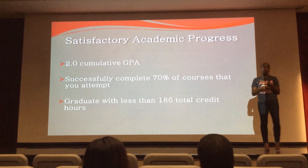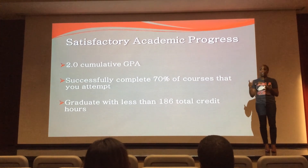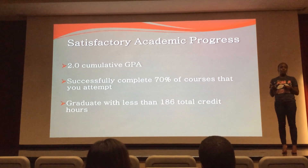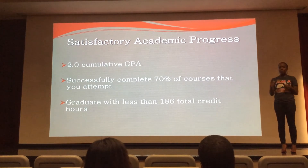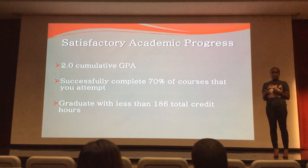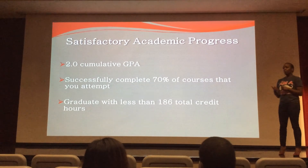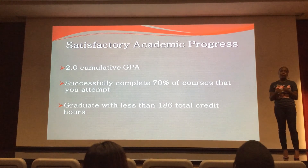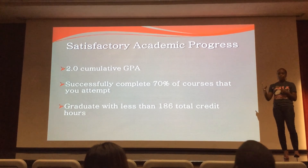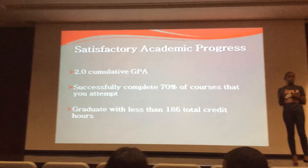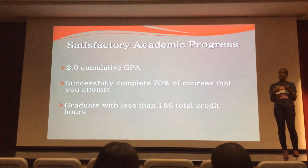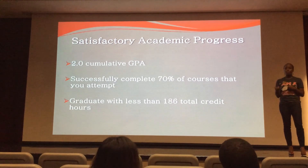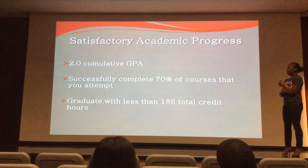Satisfactory Academic Progress: the federal government requires students to meet certain standards to continue receiving federal aid in any form, even loans. Students must maintain a 2.0 cumulative GPA. If they fall below a 2.0, the first time they'll receive a warning. If they remain below the 2.0 for the next consecutive semester, they will receive a disqualification and are no longer eligible for federal aid.